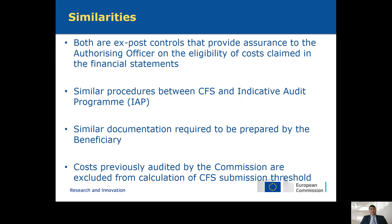There are also similarities: both tools are ex-post controls that provide assurance to the authorizing officer on the eligibility of costs claimed in the financial statements. The procedures between the two are quite similar and therefore the documentation is also quite similar, however there are differences — for example in EC audits we also have physical inspection of equipment, we look for the EU logo and the JU logo, and we have interviews with some of the persons declared in personal costs, which is not the case for CFS procedures. Also, if a project has three periods and two are already audited by EC audits, then only the third period should be included in the threshold for CFS submission, and it may be that no CFS is required anymore.